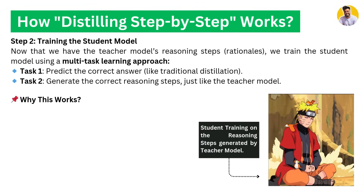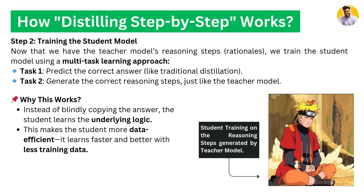In step two, we train the student model. Now that we have the teacher model's reasoning steps, we train the student model with a multi-task learning approach. The first task is to predict the correct answers, and the second task is to generate the correct reasoning steps, just like the teacher model does. Instead of blindly copy-pasting the answer, the student learns the underlying logic. This makes the student more data-efficient — it learns faster with better training and less training data.